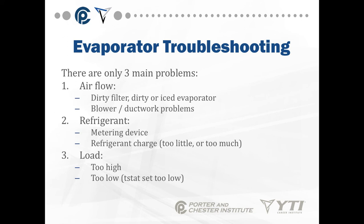Evaporator troubleshooting comes down to three main problems: airflow, refrigerant, and load. Airflow issues include dirty filters, dirty or iced evaporators, and blower or duct work problems. Refrigerant issues include metering device problems and refrigerant charge. Load can be too high or too low.